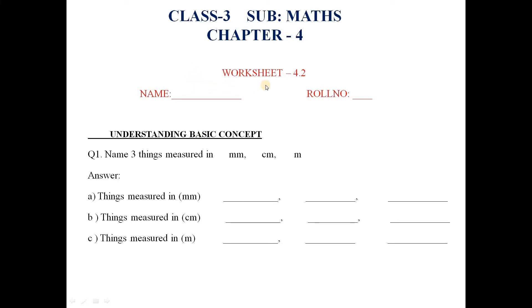Next is Worksheet 2: Understanding Basic Concepts. Name three things measured in millimeter, centimeter, and meter. For things measured in millimeter, write the names here. Things measured in centimeter include: matchstick, comb, pencil. Things measured in meter include: height of a tree, depth of a well.